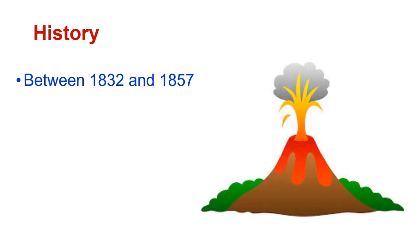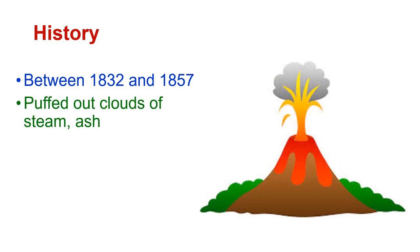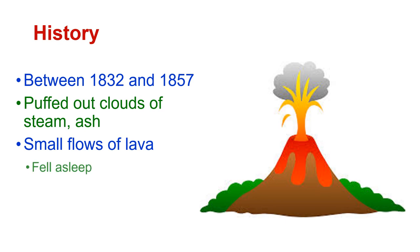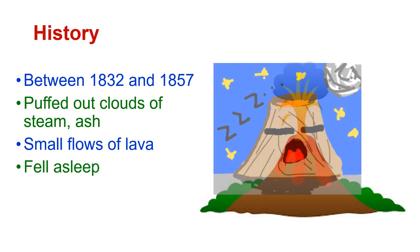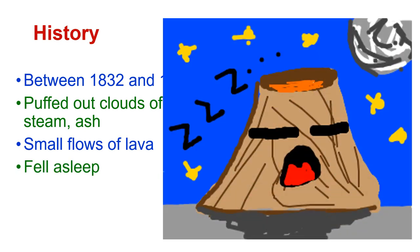Some history with Mount St. Helens: between 1832 and 1857, Mount St. Helens erupted. It puffed out clouds of steam and ash, small flows of lava, and then it fell asleep.